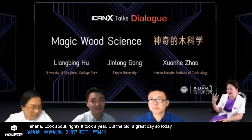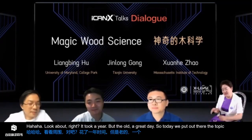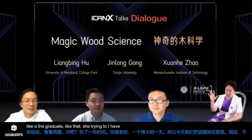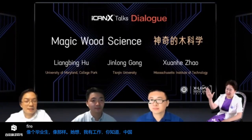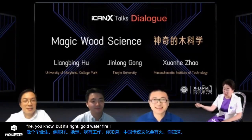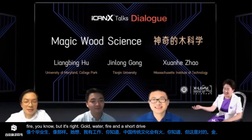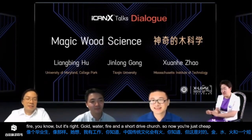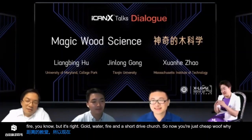So today we focus on these topics. In traditional Chinese culture, we have five basic elements: gold, wood, water, fire, and soil. Now you guys chose wood — wood is one of the basic materials. Liang Bing, my question is: what was the trigger for you to go to wood? You study physics — all your training background is physics.